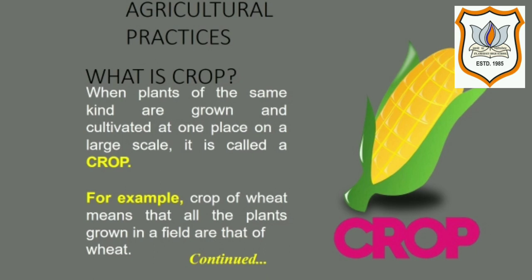For example, a crop of wheat means that all the plants grown in the field are of the wheat variety. A crop is called 'fasal' in Hindi. Crops are grown in the soil in the fields by farmers.